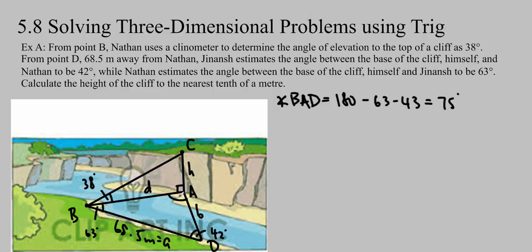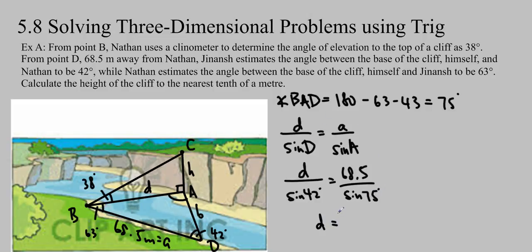And then we can use the sine law because I've got big A and little A. So we want to find little D. We're going to use little D over sine D equals little A over sine A. And just fill in the values. D over sine 42 degrees equals 68.5 over sine 75 degrees. And if you just type it into your calculator, if you have the degrees on, you should get that D is equal to 47.5 meters.